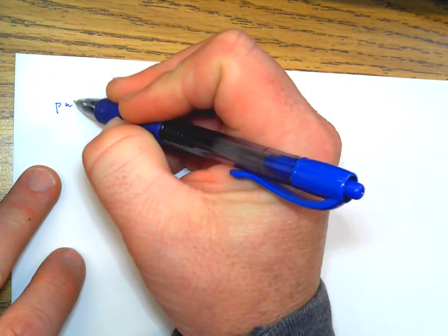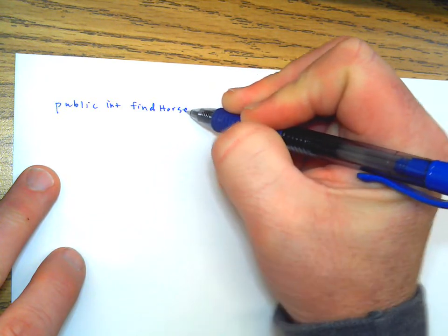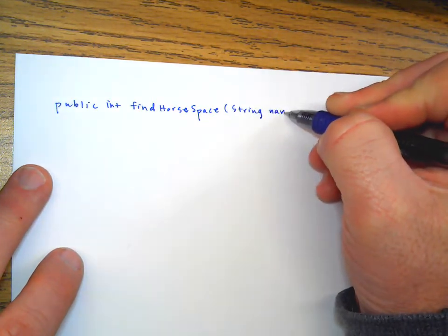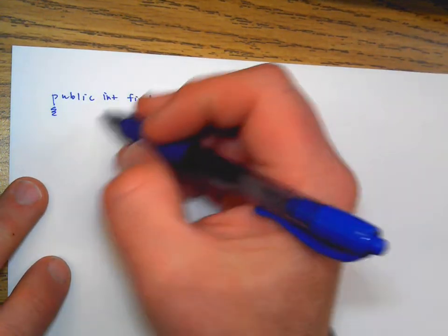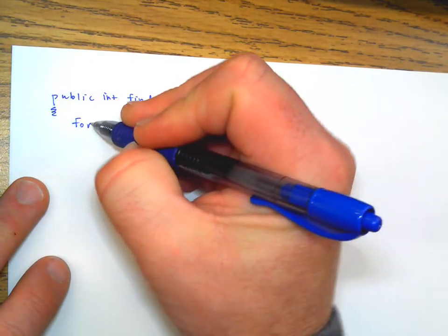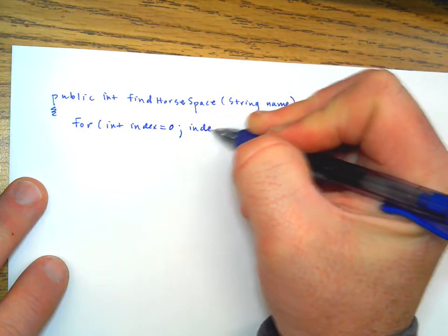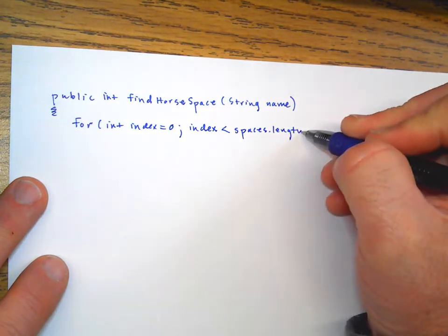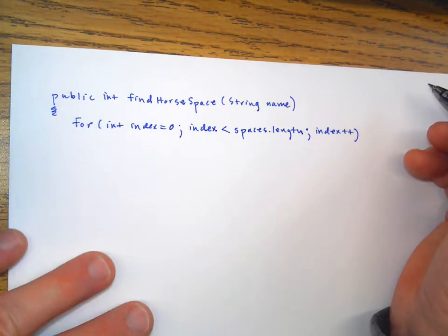For Part A, I'll show you two approaches. The public findHorse method takes a String argument — the name of the horse you're looking for. The best approach is a for loop: for int index equals zero, index less than spaces.length — you don't want to hard-code the number, it should work for any size — index plus plus.